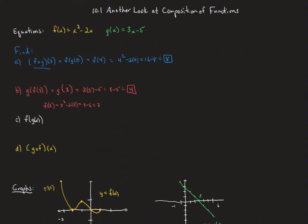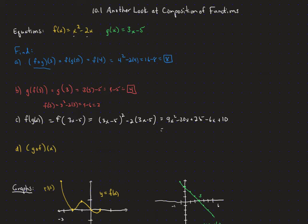For f of g of x, we take all of g(x) — the whole 3x minus 5 — and plug it into f in place of x. So we get (3x − 5)² minus 2 times (3x − 5). Squaring out (3x − 5): first squared, twice the product, plus second squared, then distributing the negative 2 gives a −6x plus 10. That simplifies to 9x² − 36x + 35. That's our new function f composed with g of x.